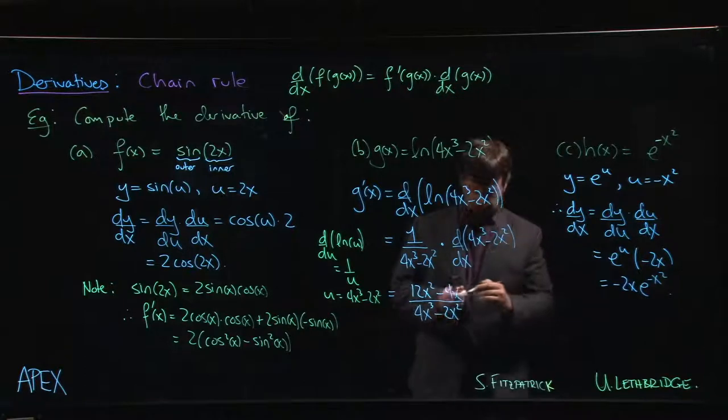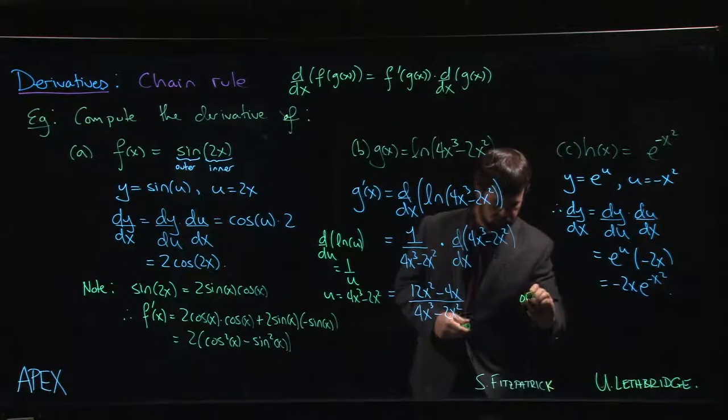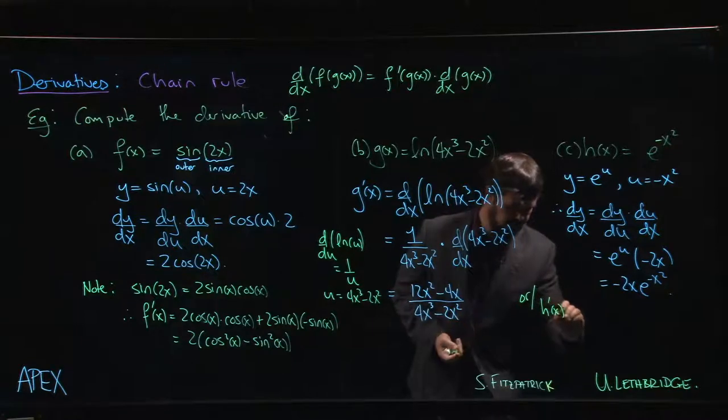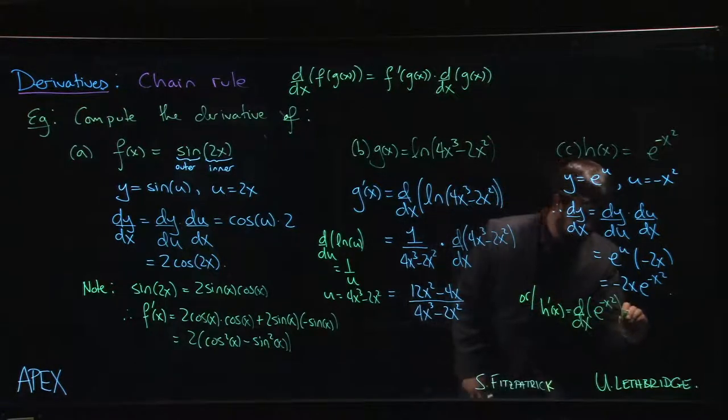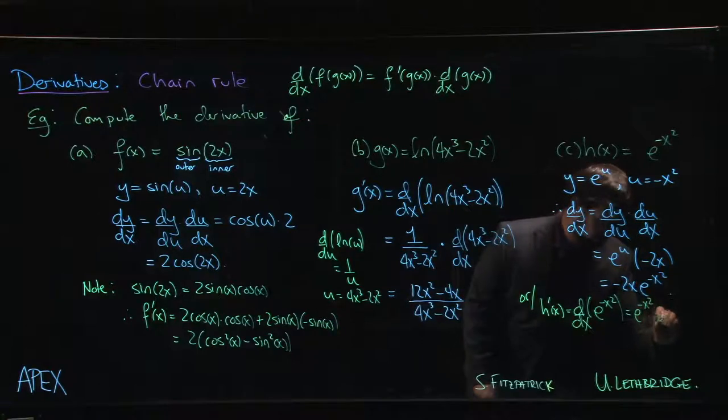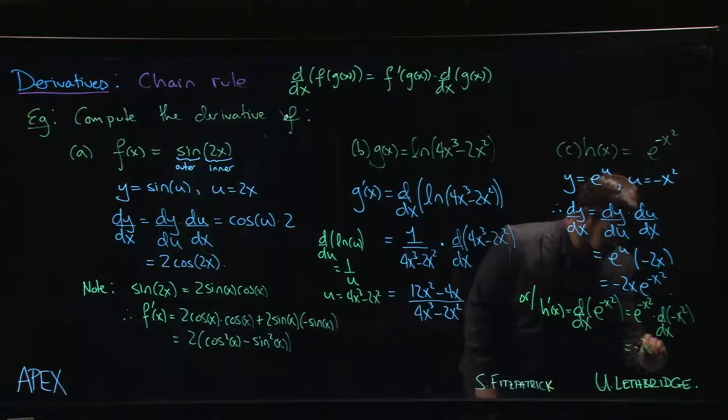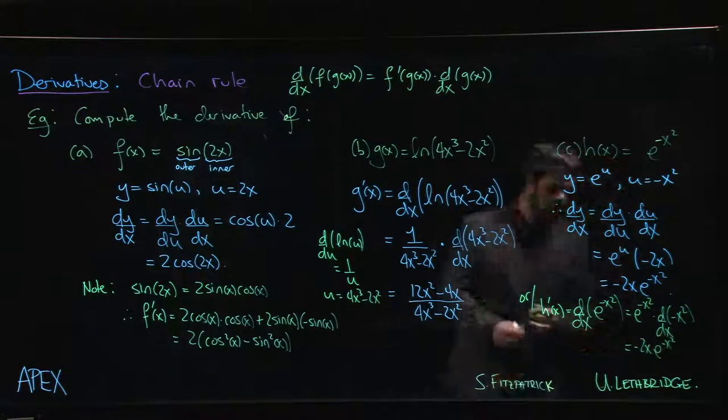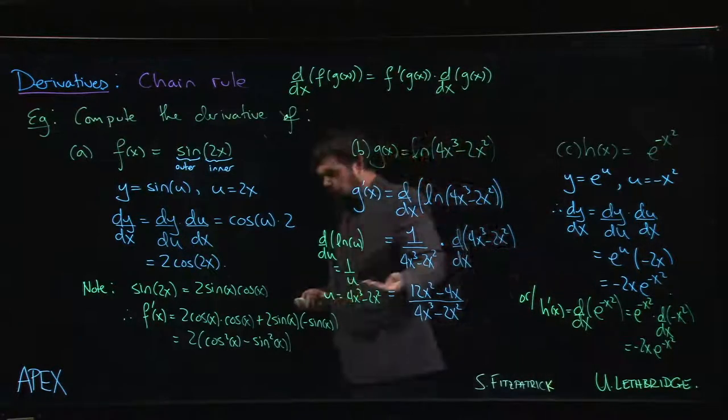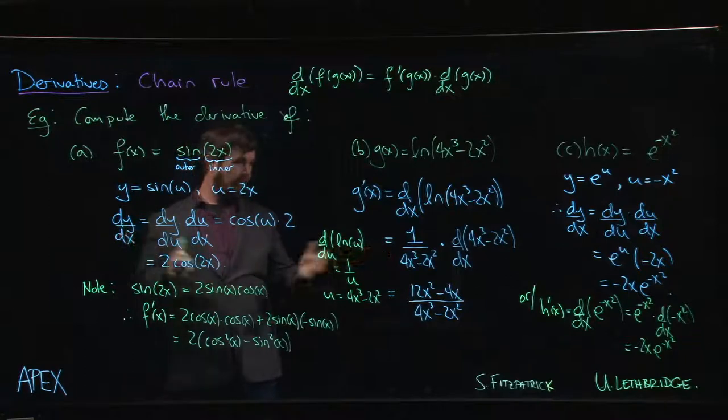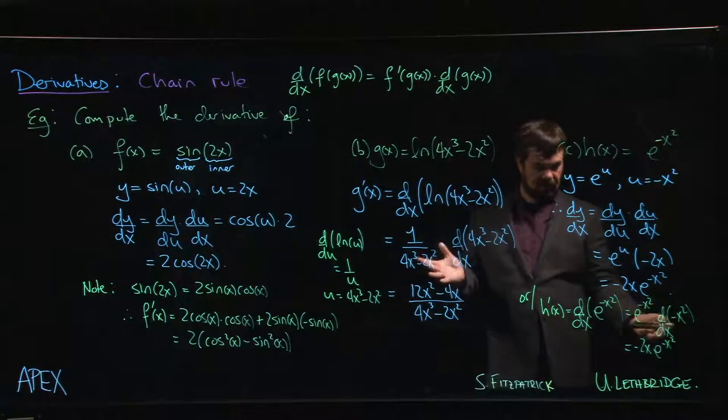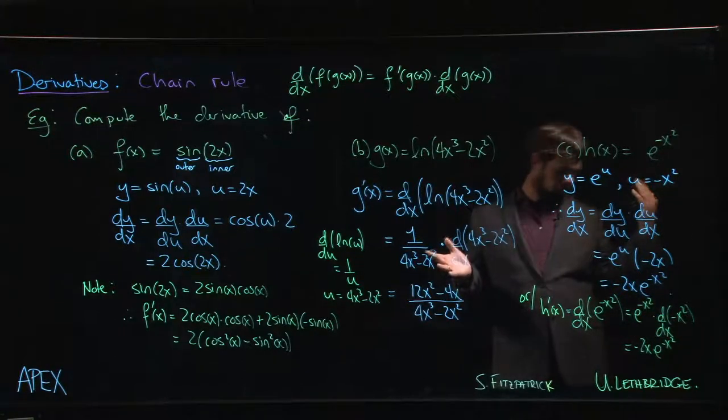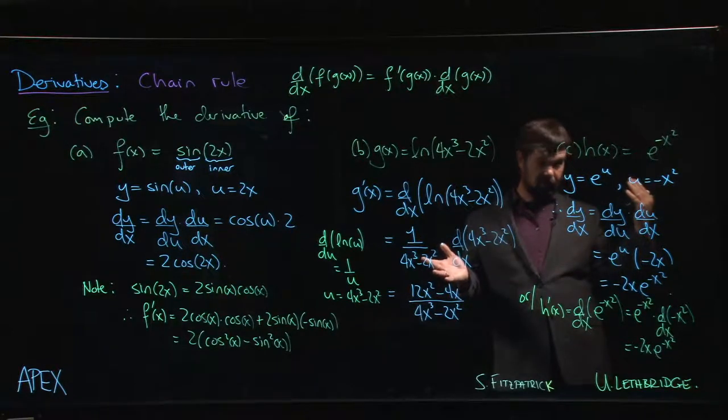Or we could also do h prime of x is the derivative of e to the minus x squared, which is e to the minus x squared times the derivative of the inside. And again, that's going to get you the same result. So whatever you're comfortable with, you can do it either way. It doesn't matter. Either way is fine as long as you've included the necessary steps and you've got the answer at the end.